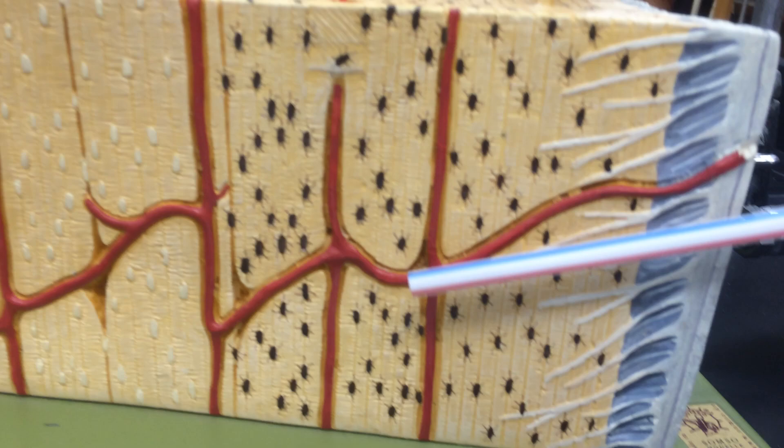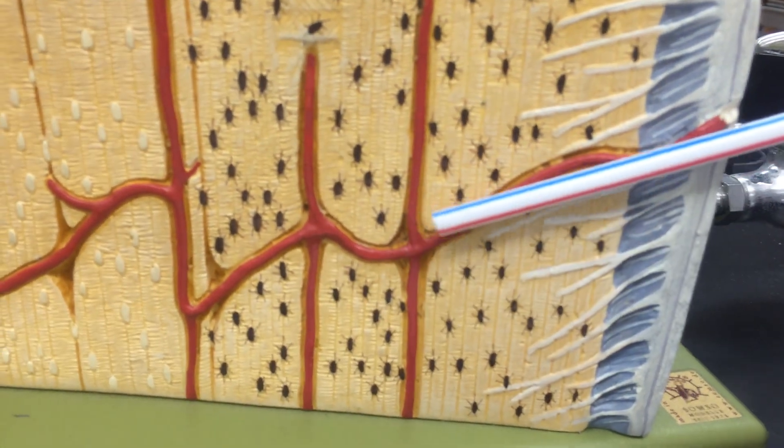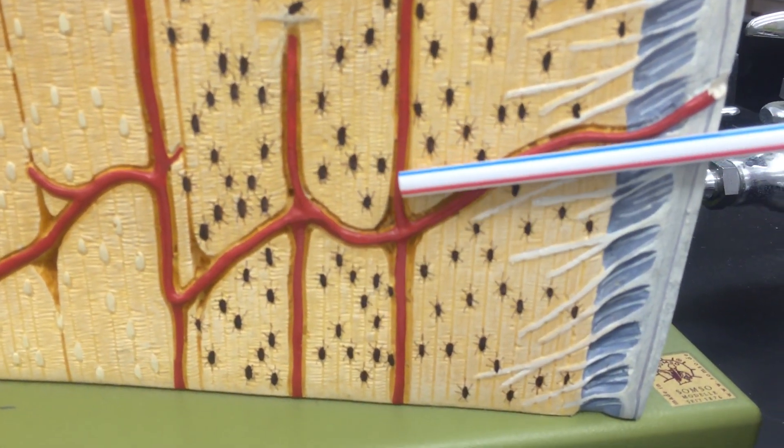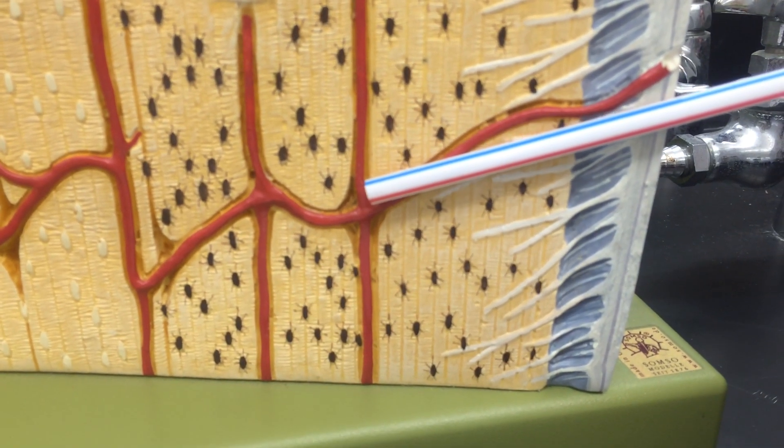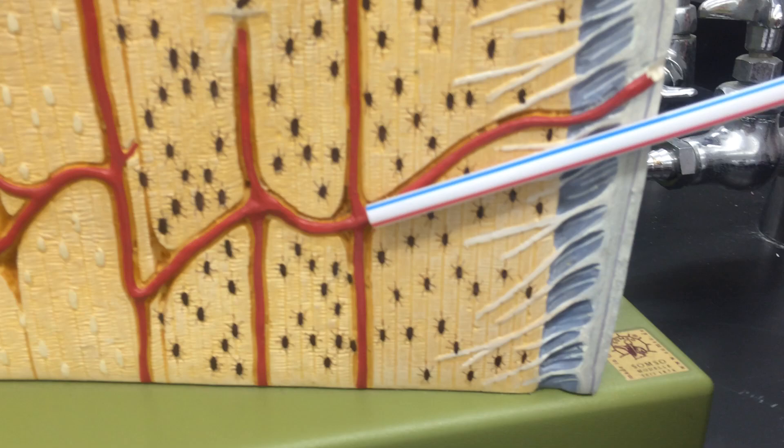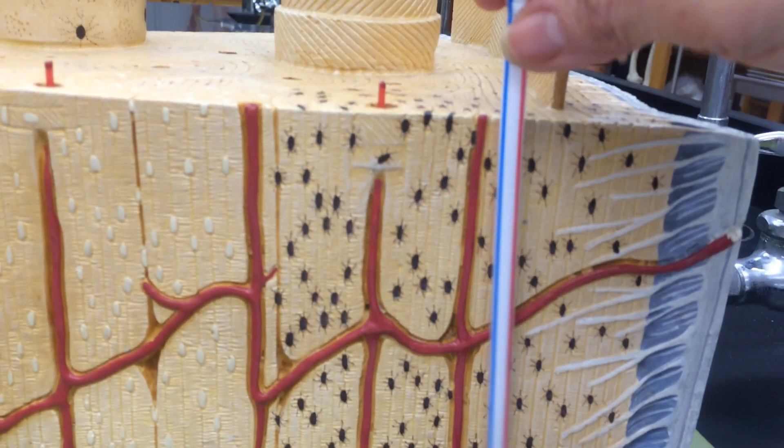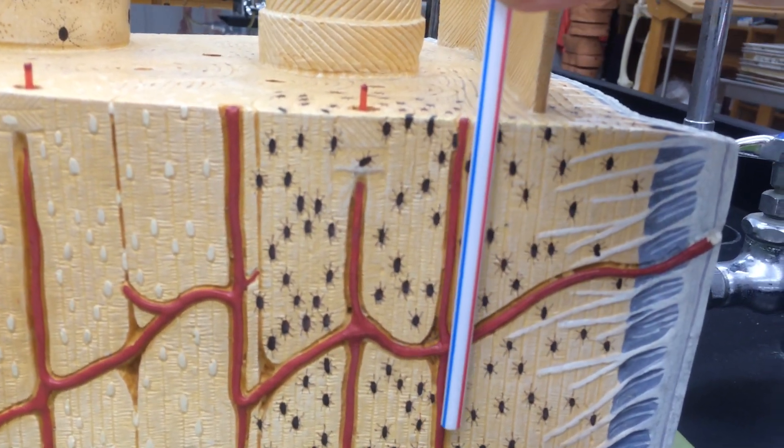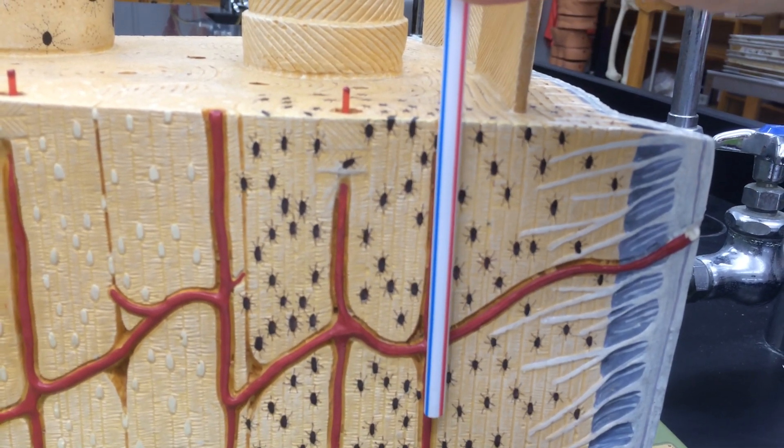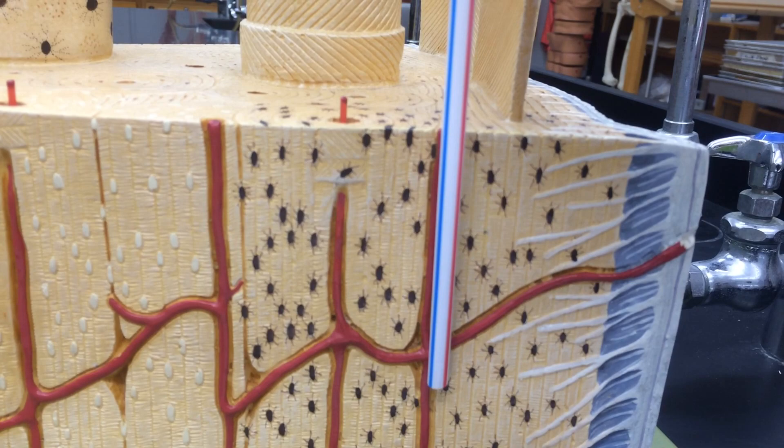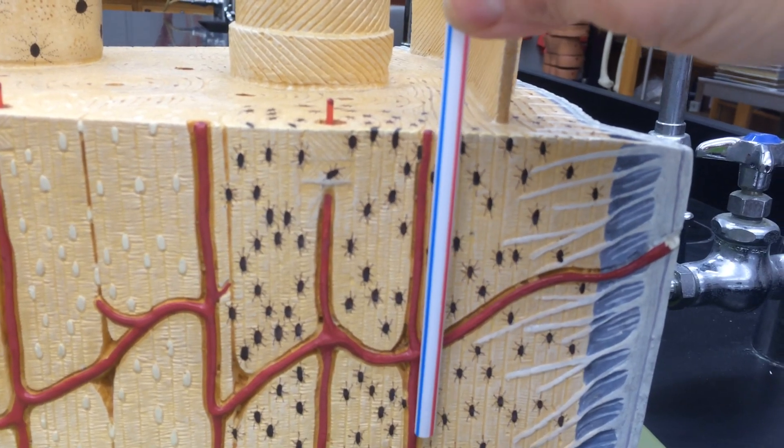Another important structure that I want you guys to remember are the canals that run horizontally. These canals are known as perforating canals or Volkmann's canals and notice that they are connected vertically with the Haversian canal.